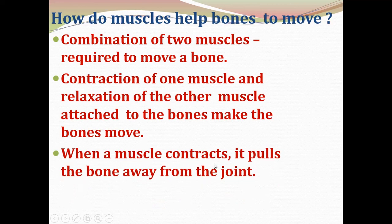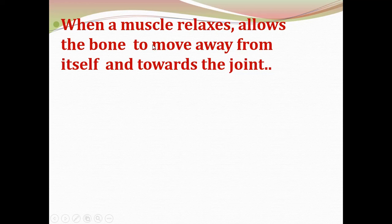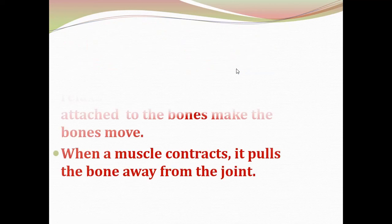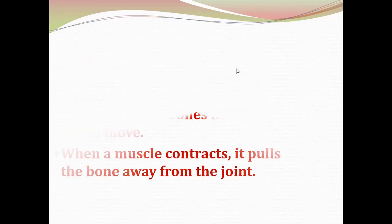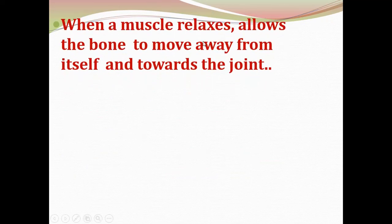When a muscle contracts, it pulls the bone away from the joint. We know bones are connected to other bones by joints. When a muscle relaxes, it allows the bone to move away from itself and towards the joint.